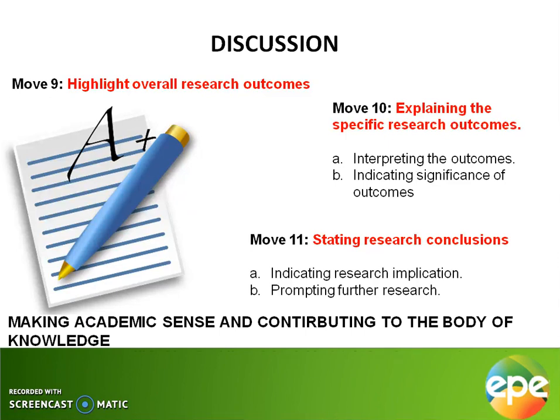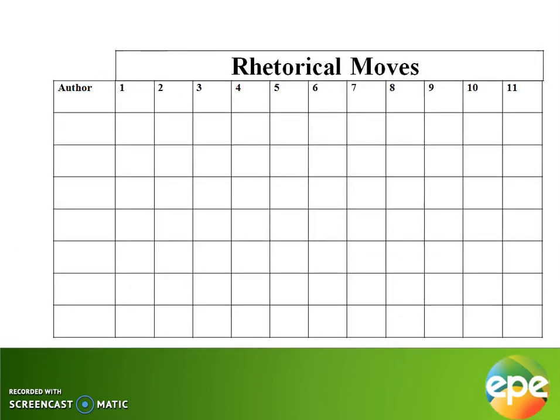All of this must make academic sense and contribute to the body of knowledge. This table helps you understand how to collate information based on the authors and how you have managed to identify each section of the scholarly written articles you have consulted, with respect to identifying the moves from move one up until move eleven. Using this table, you can present your narrative in a coherent, logical, and uniform way without distorting information or mixing up points.